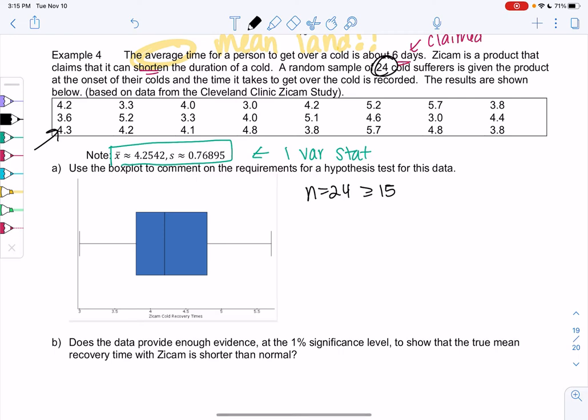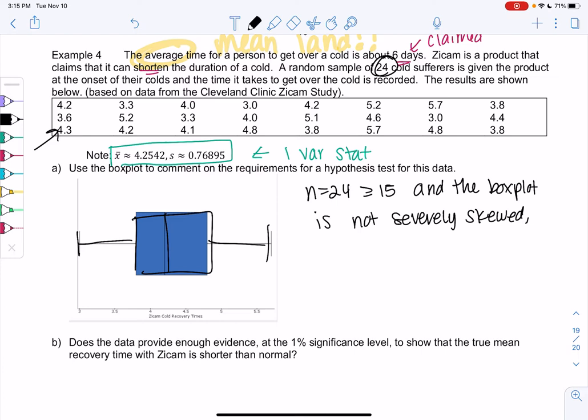So you could enter this data into StatCrunch and have StatCrunch make the box plot for you. Severely skewed, maybe one side would be really long. So since N is at least 15 and the box plot is not severely skewed, the requirements are met. So if you don't have 30, but you do have at least 15, the graph can be a good way to check for severely skewed or not.